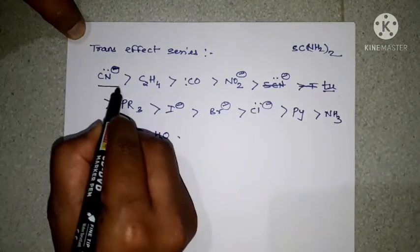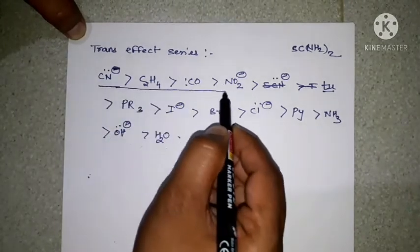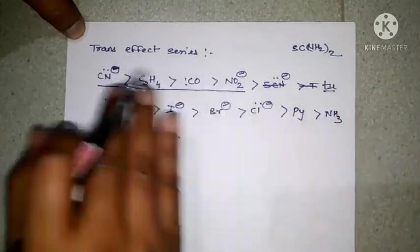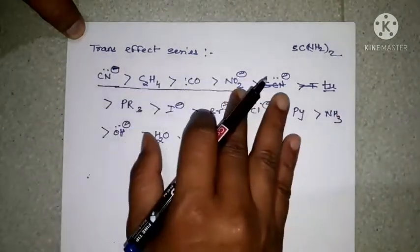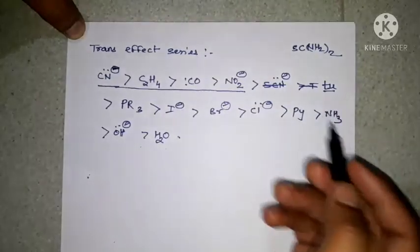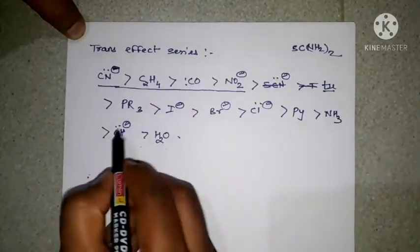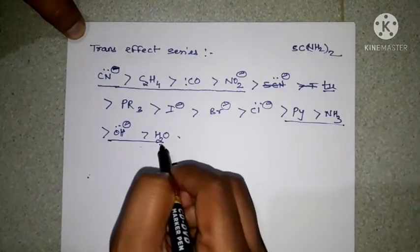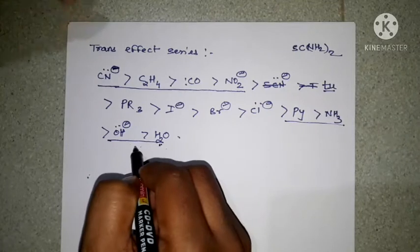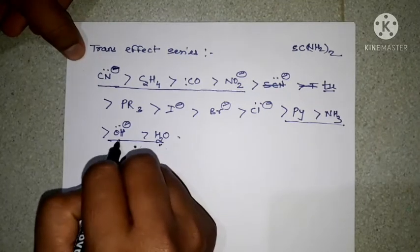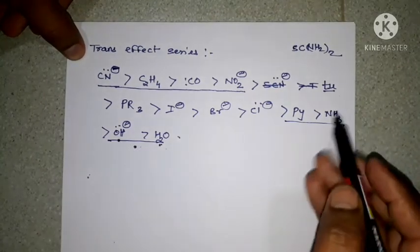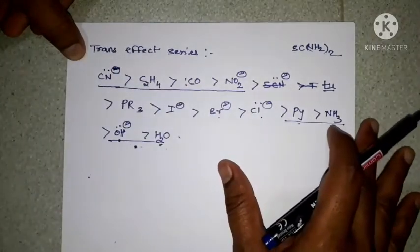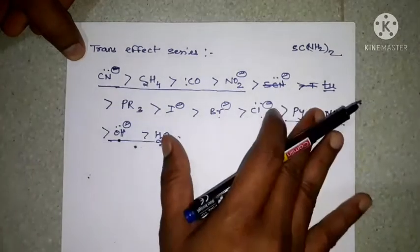So cyanide, ethylene, carbon monoxide, and nitro group all show high or greater trans effect ability compared to the last molecule H₂O, which shows the least trans effect. OH⁻, NH₃, pyridine, Cl⁻, Br⁻ are in the lower range. This is the increasing order of the trans effect series.